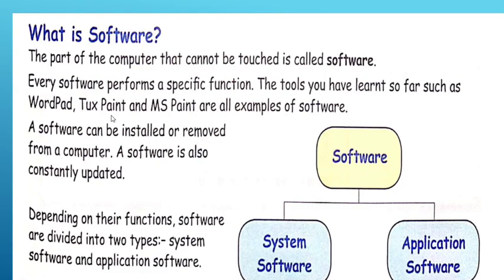TuxPaint is also a software where you can paint. Another example is MS Paint, or Microsoft Paint. These are examples of software. Software can be installed or removed from a computer. We can install software from a CD, pen drive, USB, or DVD to the computer. Check this diagram to see how we install software.